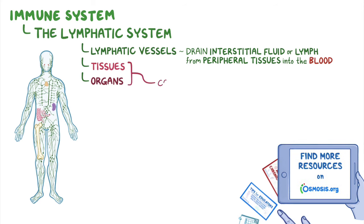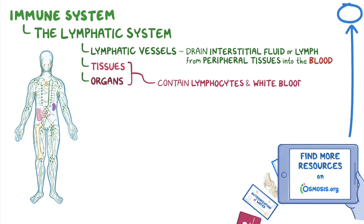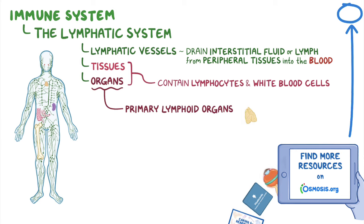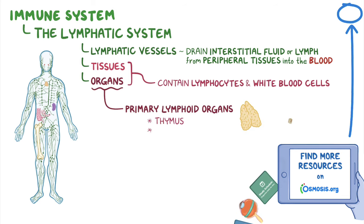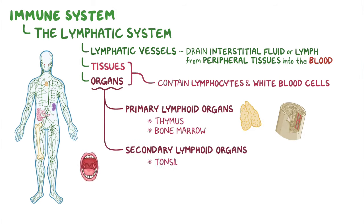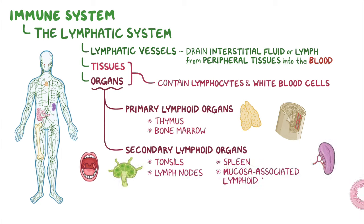Lymphoid tissue and organs contain a lot of lymphocytes and other white blood cells. The primary lymphoid organs include the thymus and bone marrow, and the secondary lymphoid organs include the tonsils, lymph nodes, spleen, and mucosa-associated lymphoid tissue, or MALT for short.